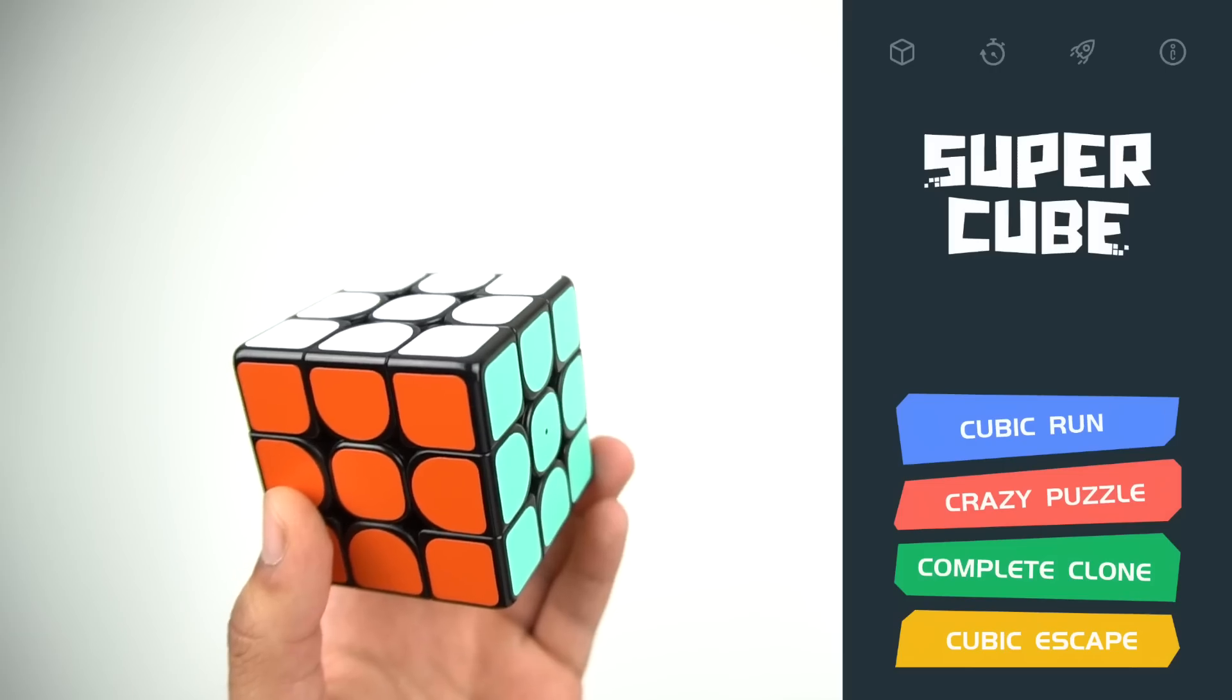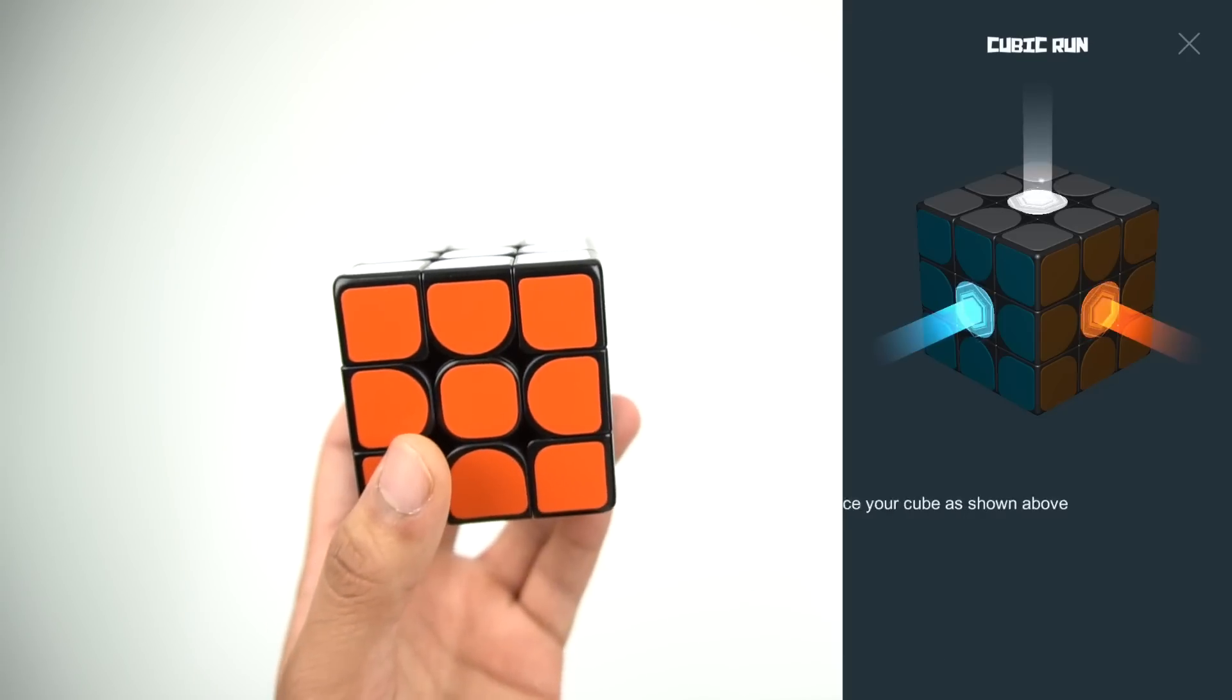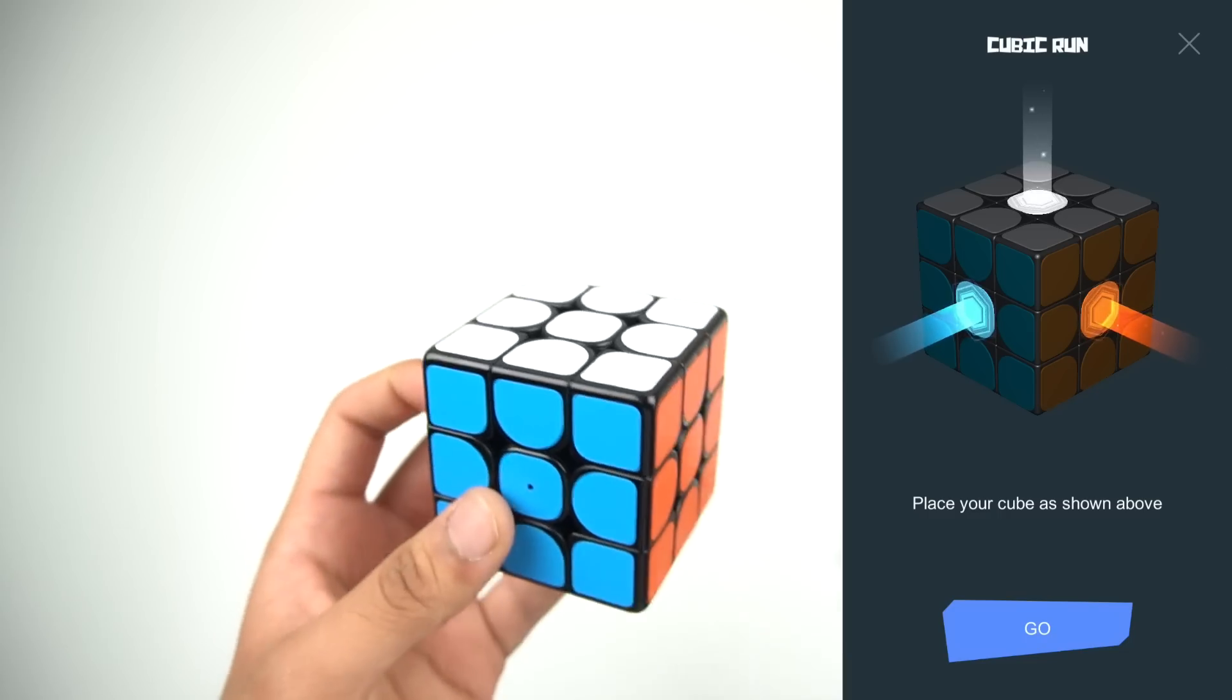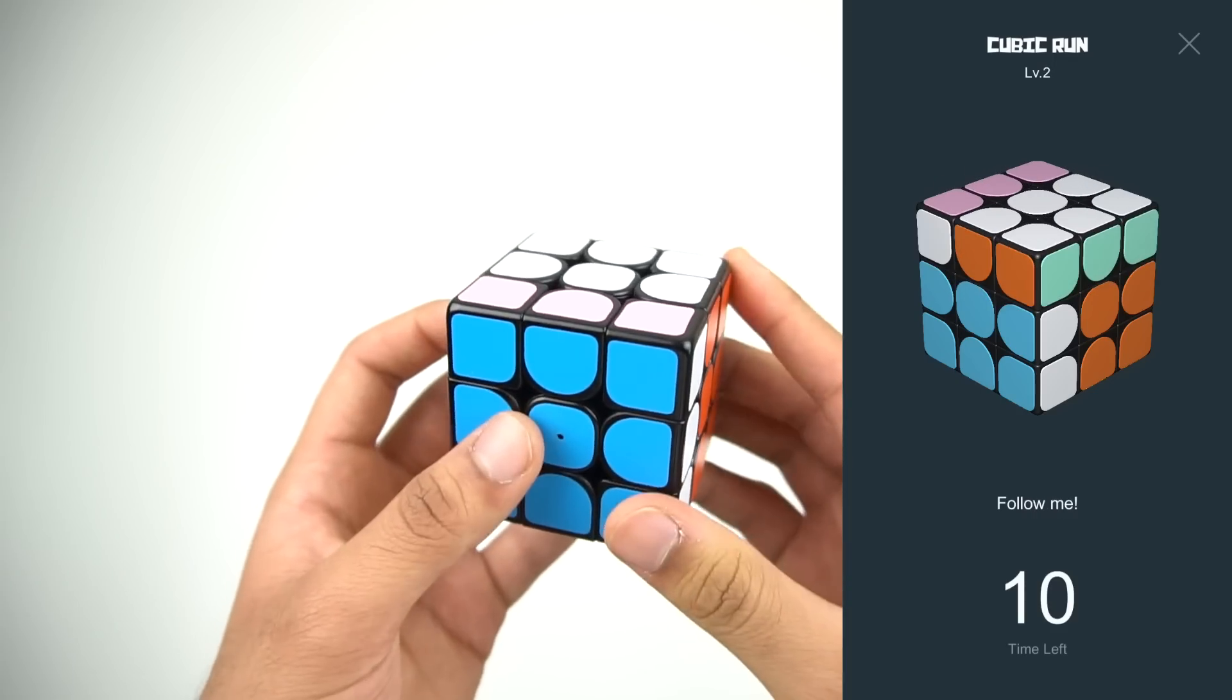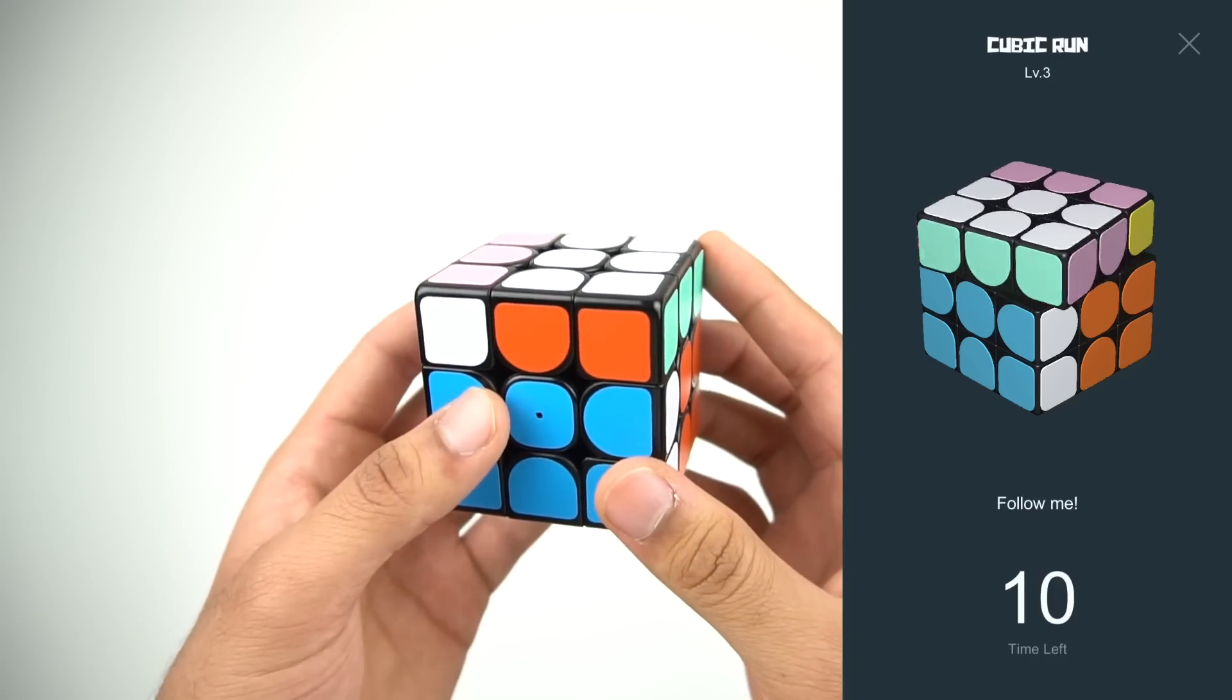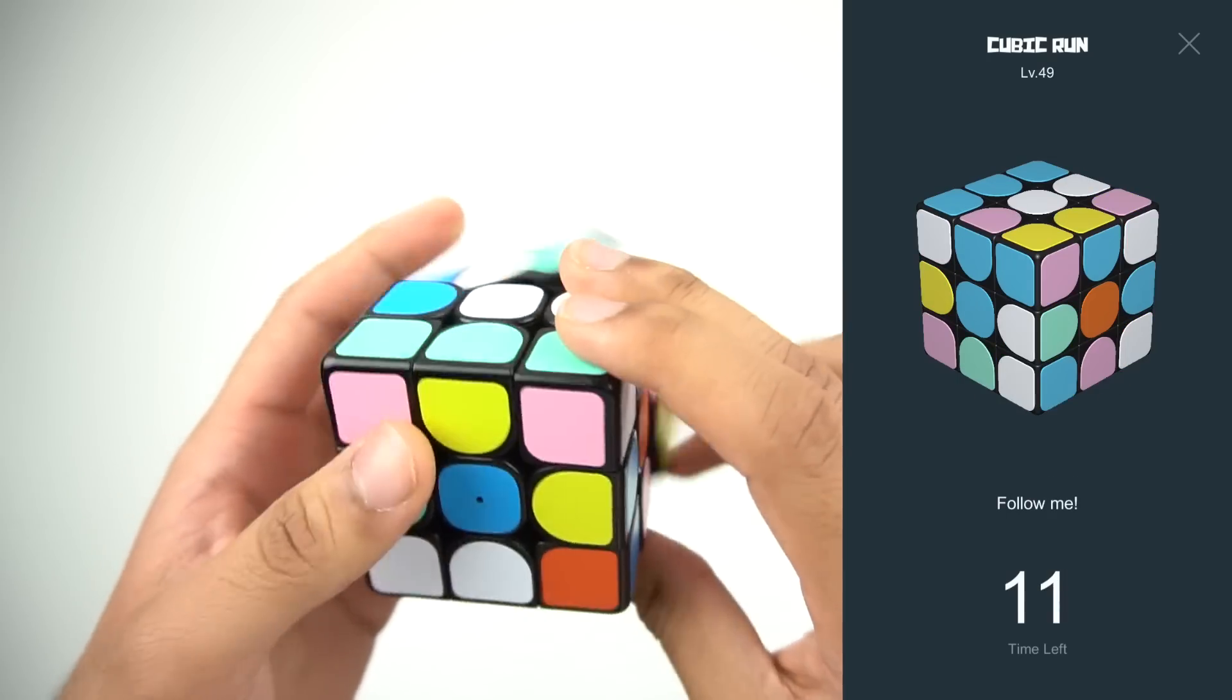Moving on to the games, the first one is called Cubic Run, one of my favorites. It's basically like a follow-along memory game where you have to make the same moves on your cube as the ones the game makes. As you get to higher levels, they turn into two or three moves at a time and keep going higher and higher.